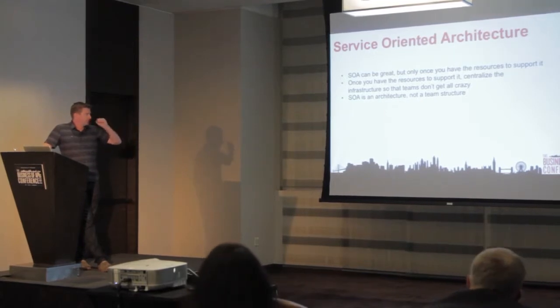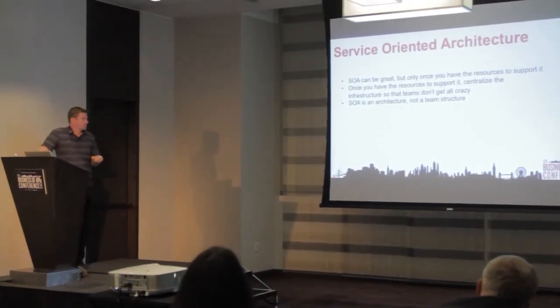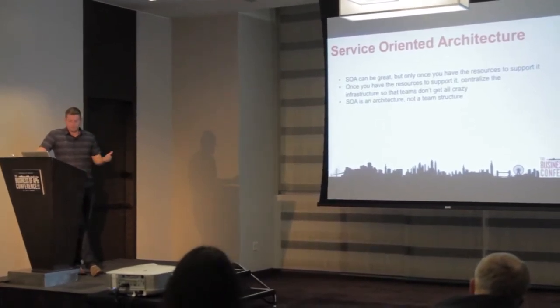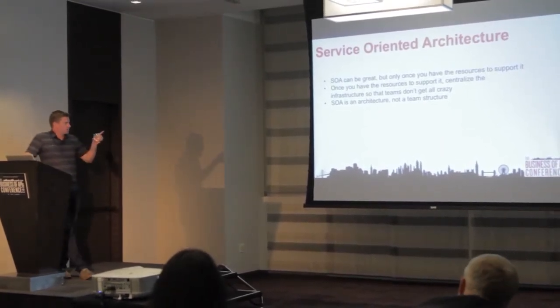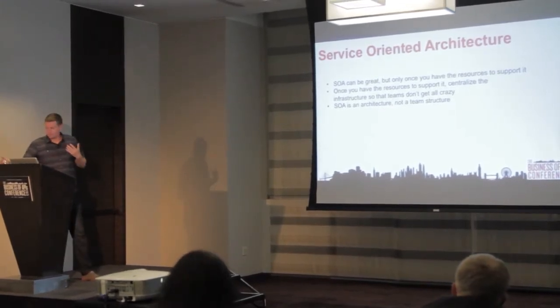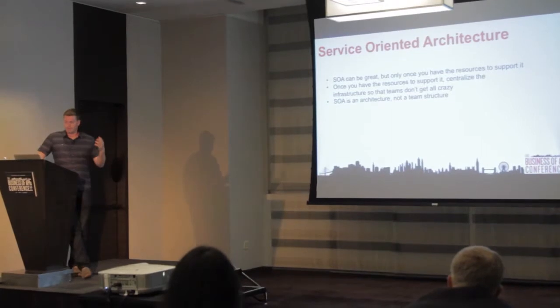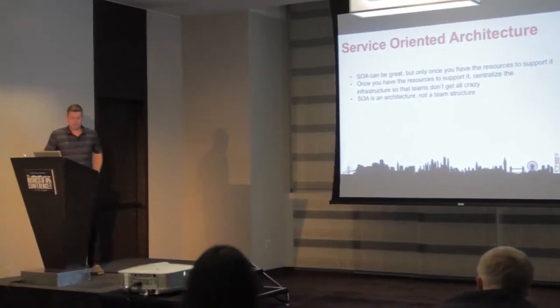But then once you do have the resources to support it, so for example, we started our infrastructure team probably about a year ago. So the first two years, we didn't have a formal infrastructure team. It was just everybody kind of trying to figure out what was going on. But once you do have the resources to support it and have a formal infrastructure team, I have a mindset that you should centralize the infrastructure so that teams don't get all crazy doing all different things. I know Amazon, for example, is a big believer in service-oriented architecture, but they also even structure the teams as a service-oriented architecture. So every team maintains their own piece, which maybe that works at the scale Amazon's at. We haven't quite gotten to that scale yet, but I'm sure we will pretty soon. But to me, it's like centralizing that infrastructure just makes things work much better.